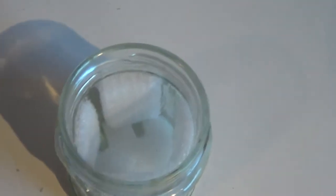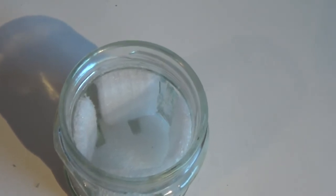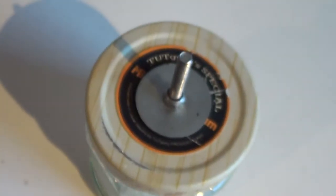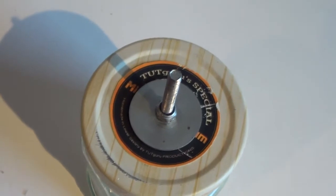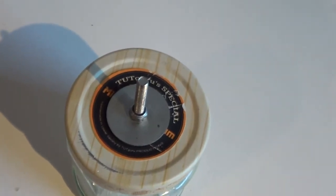The egg will be held in place by the foam pads. The lid will be screwed on, and then we go into the garage to put the container into the electric drill.